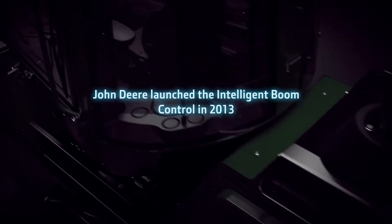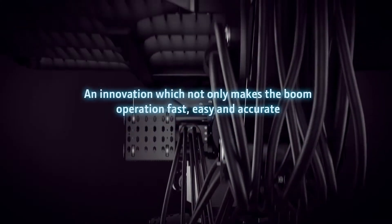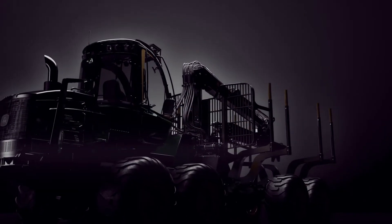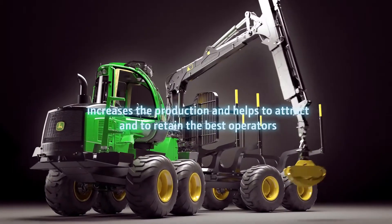John Deere launched the Intelligent Boom Control in 2013, an innovation which not only makes the boom operation fast, easy and accurate, but most importantly, increases production and helps to attract and retain the best operators.